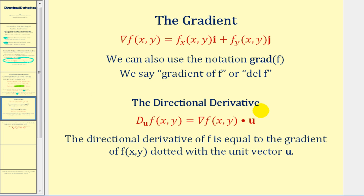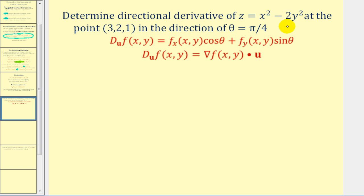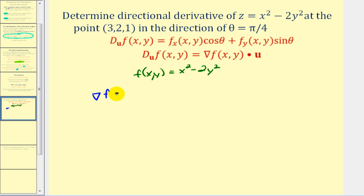In our first example, we want to determine the directional derivative of the function at the point (3, 2, 1) in the direction of θ = π/4. We'll find the gradient of f and then dot it with the unit vector forming the angle θ = π/4. First, replace z with f(x, y). The x component of the gradient is the partial derivative of f with respect to x, which gives us 2x, and the y component is the partial of f with respect to y, which gives us −4y.